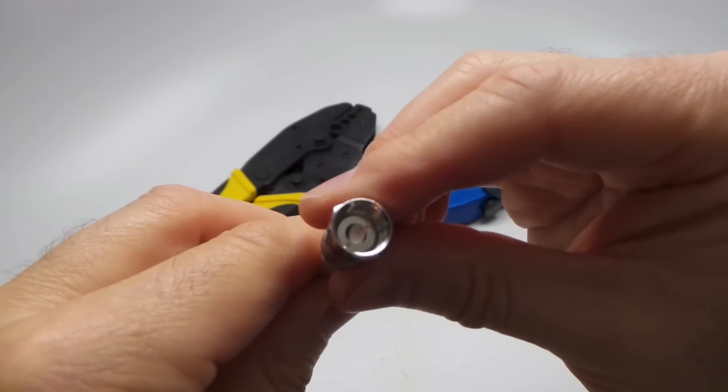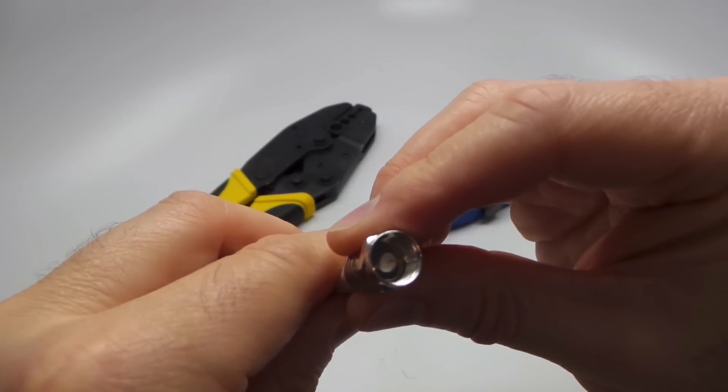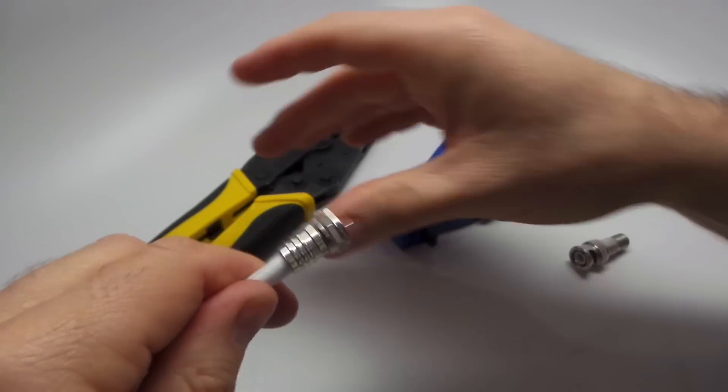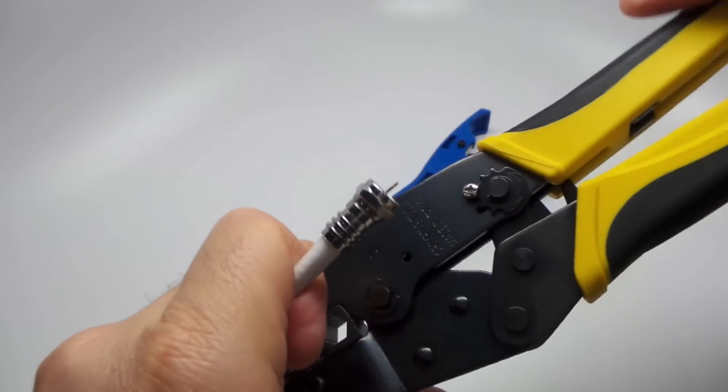You basically want the dielectric insulator flush against the wall of the F connector. So make sure that's flush. It's okay if it's sticking out a little bit. You just don't want it below there.